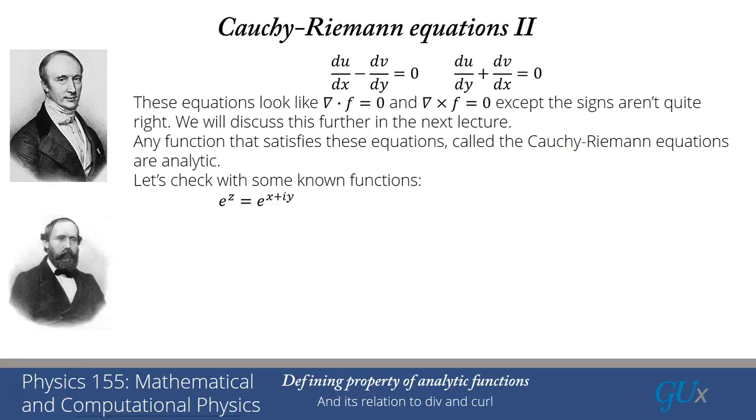So the first one we'll check is the exponential. I can write that as e to the x plus e to the iy. And so it's e to the x cosine y plus i e to the x sine y, which means u is e to the x cosine y, and v is e to the x sine y. Now let's plug into the Cauchy-Riemann equations. du by dx is just e to the x cosine y, dv by dy is e to the x cosine y, and so indeed we see du by dx is equal to dv by dy.